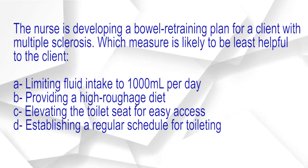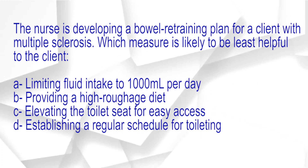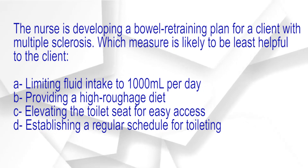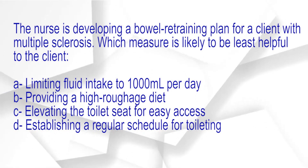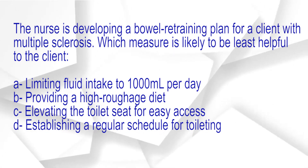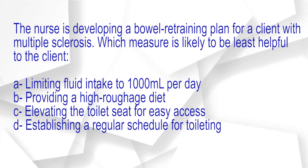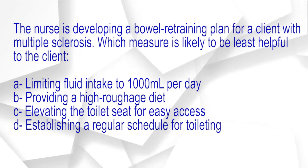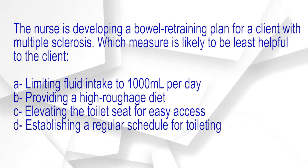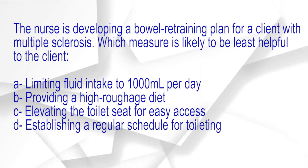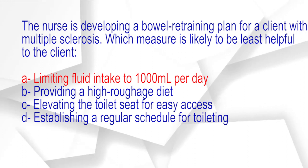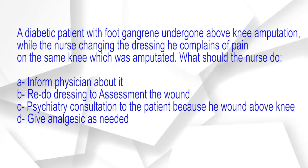When the nurse is developing a bowel retraining plan for a client with multiple sclerosis, which measure is likely to be least helpful to the client? A. Limiting fluid intake to 1000 ml per day. B. Providing a high roughage diet. C. Elevating the toilet seat for easy access. D. Establishing a regular schedule for toileting. The correct answer is option A: Limiting fluid intake to 1000 ml per day.